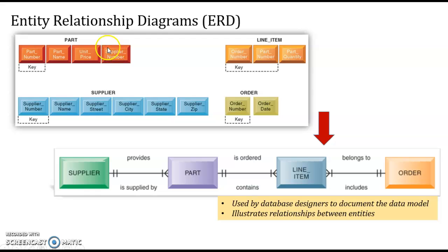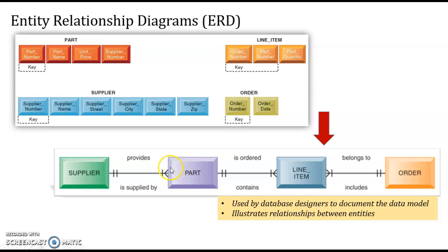In the ERD, we have part, supplier, order, and line item. The notation shows mandatory-one and mandatory-many relationships. The line at the front indicates mandatory; a circle indicates optional. The crow's foot at the back indicates 'many'; a single vertical line indicates 'one.' For example: one supplier provides many parts; one part is ordered by many line items; many line items belong to one order.